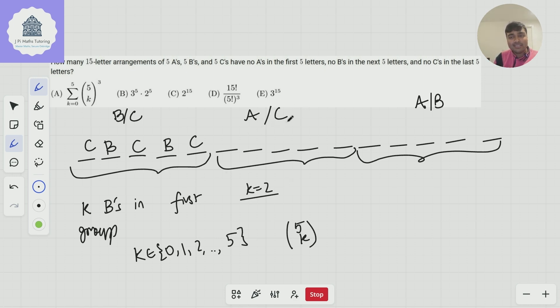Now we've got As and Cs here, but notice that because we're not allowed to put Cs in the final group, the remaining K Cs have to go in here. How many ways are there of placing those? Well, we've got five spots and K Cs to place.